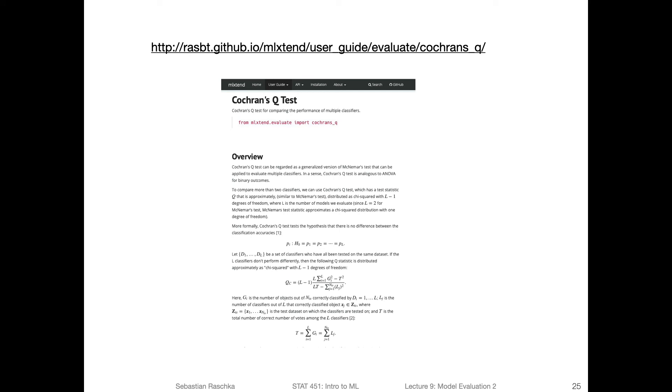I have implemented Cochran's Q test in ml extend if you want to use it. So if you have multiple models, you could actually use that from ml extend if you find a situation where you want to compare multiple models. However, I should also note, while from a statistical standpoint this is an interesting procedure, in machine learning practice I have actually never seen anyone doing that.